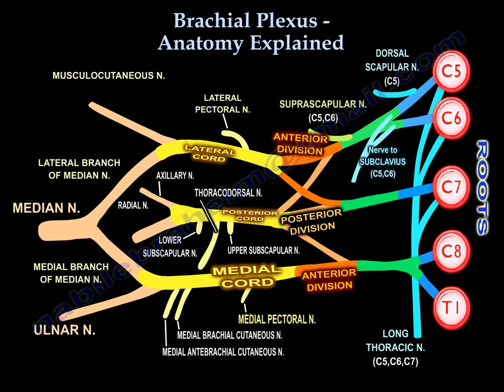Regarding the pectoral nerves: the medial pectoral supplies the sternocostal (medial) part of the muscle, while the lateral pectoral from the lateral cord supplies the clavicular (lateral) part, arising from C5 and C6. To summarize: the posterior cord gives the radial and axillary nerves; the lateral cord gives the musculocutaneous nerve; the medial cord gives the ulnar nerve; and contributions from both the medial and lateral cords form the median nerve. Thank you very much and good luck!